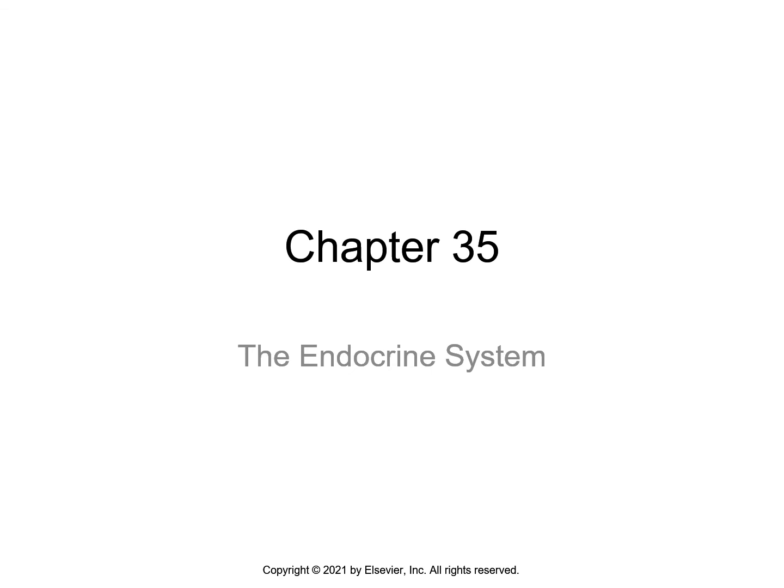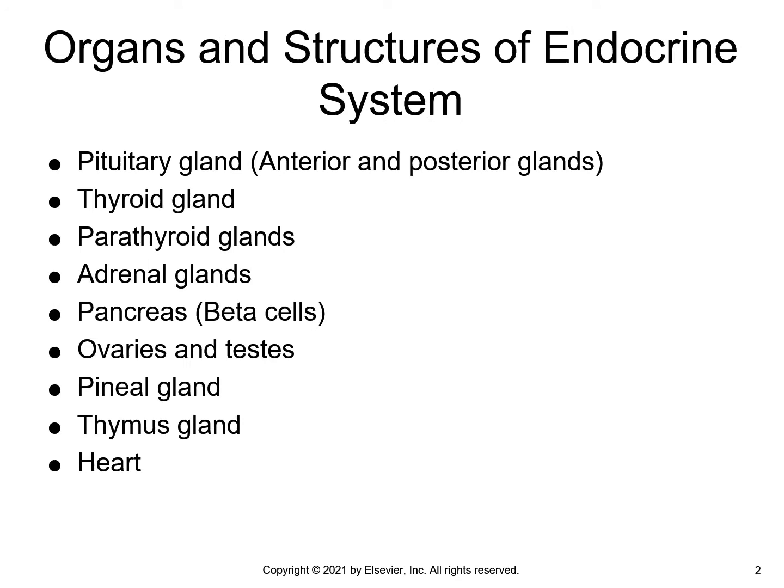Chapter 35, The Endocrine System. The pituitary gland connects to the hypothalamus. The pituitary gland has two parts: the anterior pituitary, the adenohypophysis, and the posterior pituitary, the neurohypophysis. The thyroid gland is two lobes.